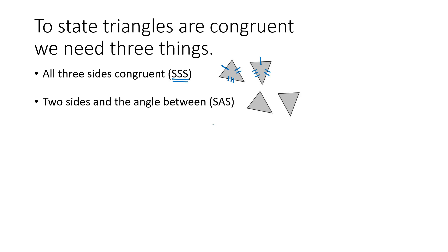But they don't all have to be sides. For example, if we have two sides and the angle between them — one side congruent to one side, a second side congruent to a second side, and the angle between them congruent to the angle between them — those triangles are also congruent because there's only one possible way to fill in that third side. Because the angle is between the two sides, we call this SAS: side-angle-side.